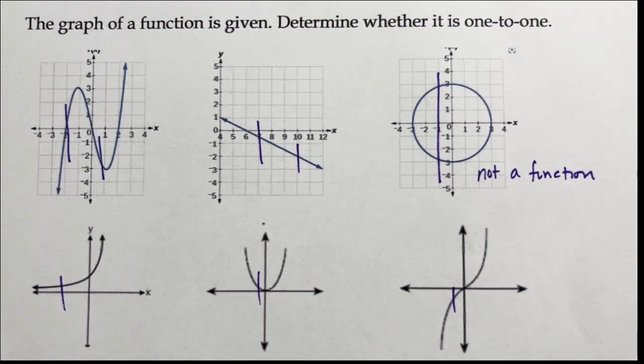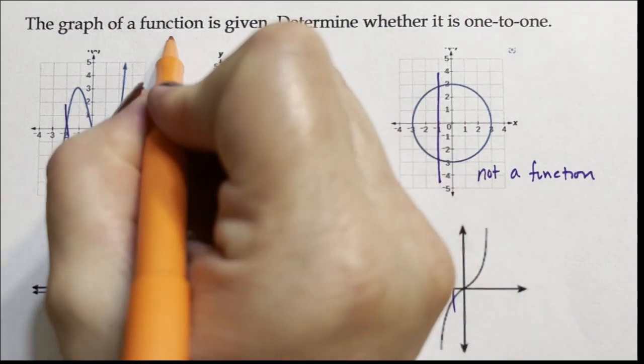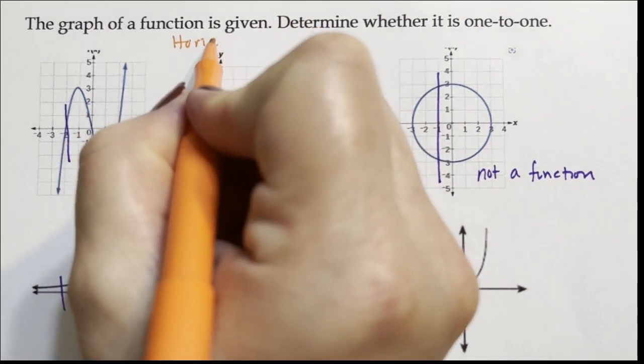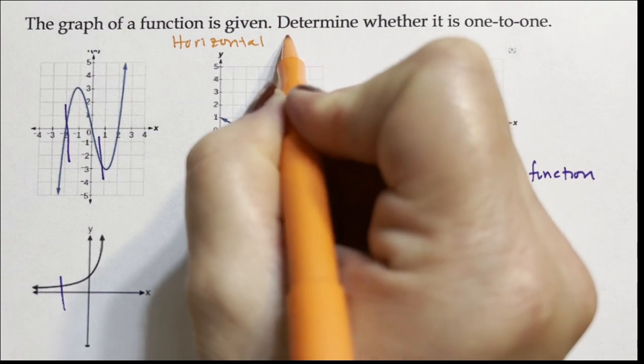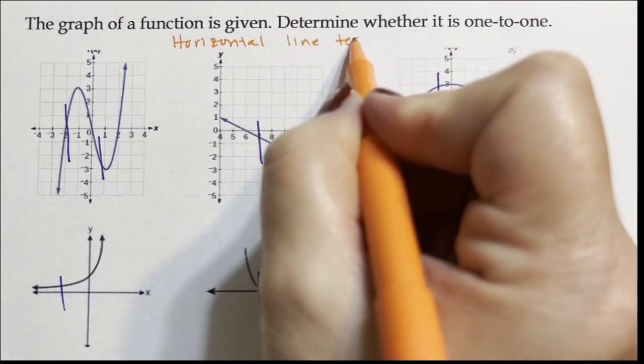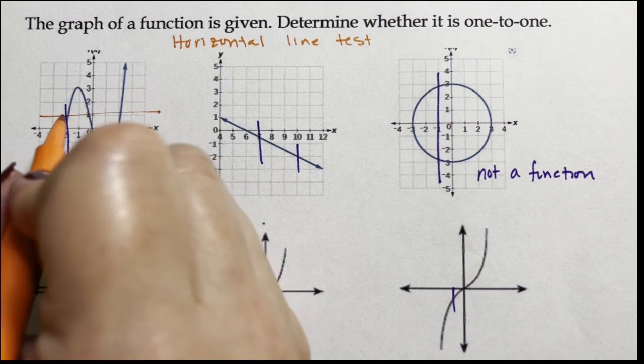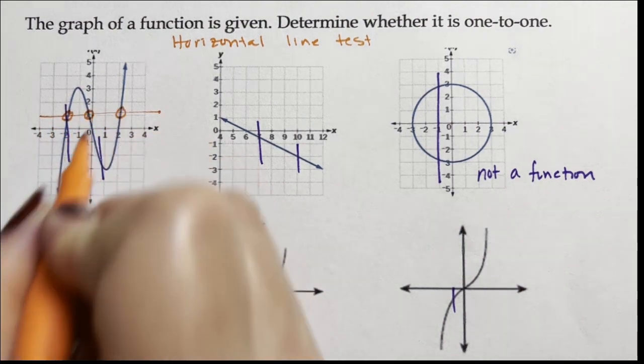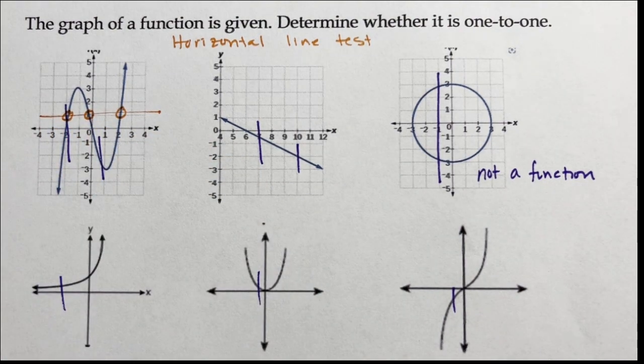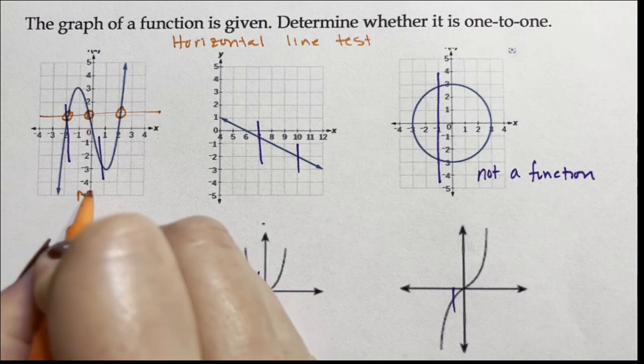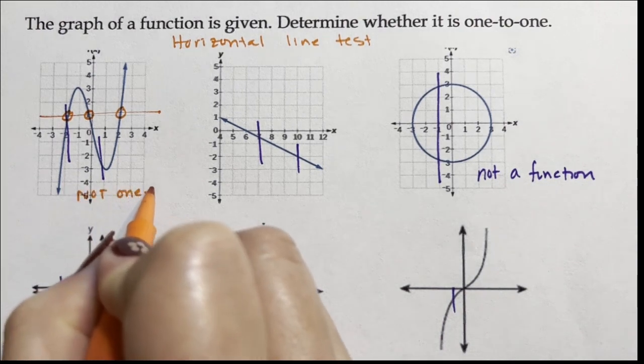But to determine if it's one-to-one, it also has to pass the horizontal line test. So that does not pass the horizontal line test because here it hits at three points with a horizontal line test. So this is not one-to-one.